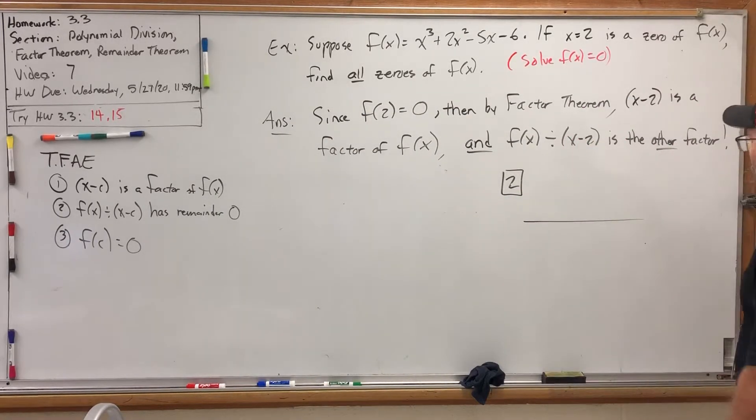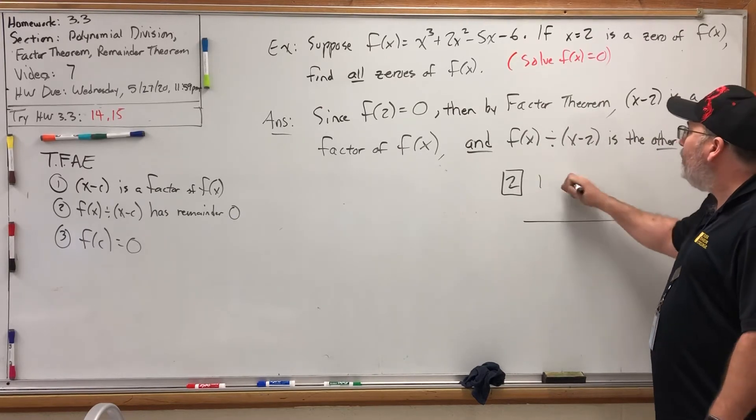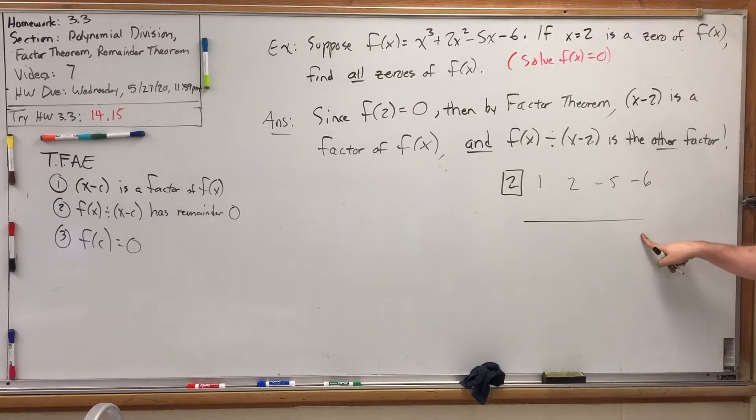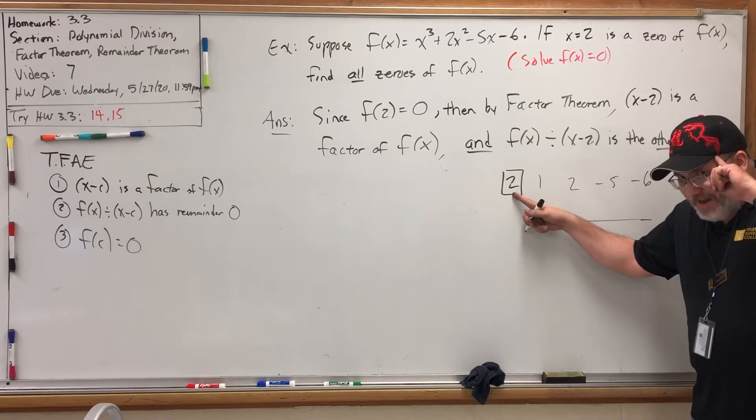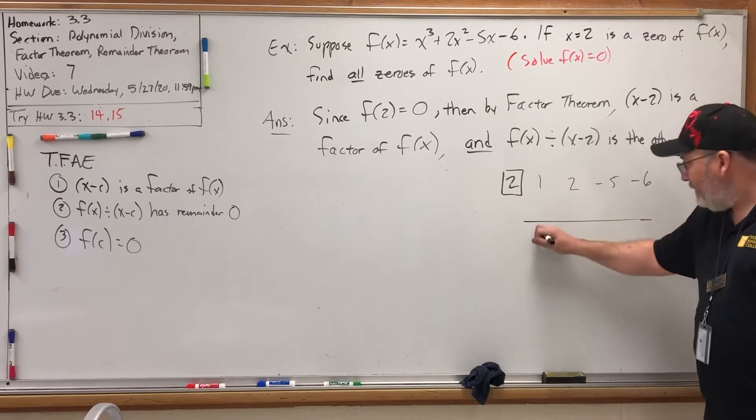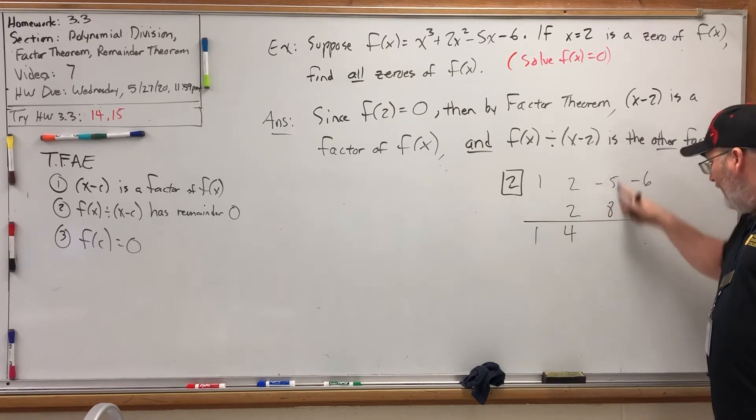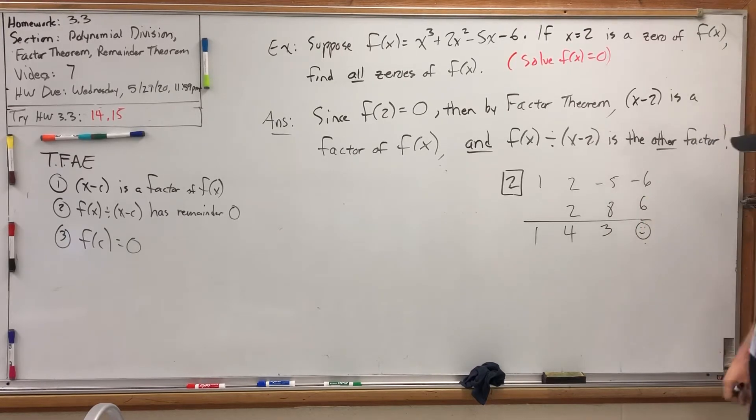So what's the top row? It's the coefficients of the dividend, which are the coefficients of the function. So 1, 2, negative 5, and negative 6. Now, I already know what's going to show up here. Part 2 of the equivalency says the remainder should be 0. It will be. And if it's not, then something went wrong. Okay, box number times 2. Keep that in mind. Add times 2. Add times 2. Add times 2. Add. Hooray, we got a remainder of 0. But we were expecting that.